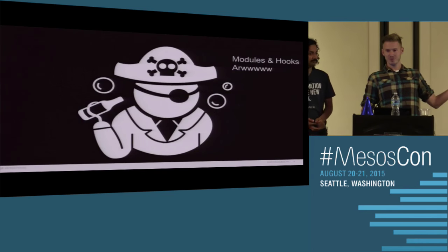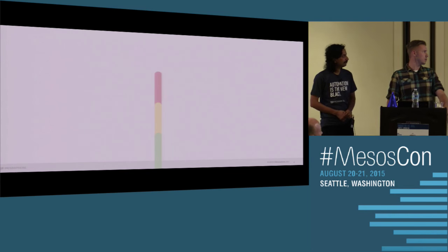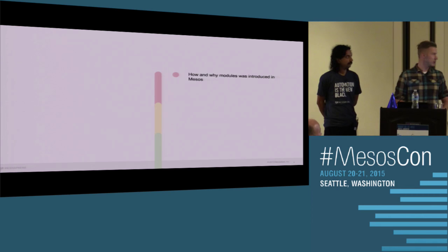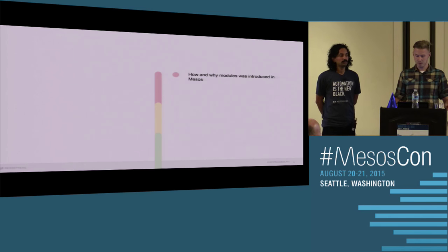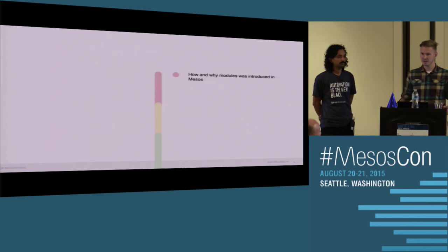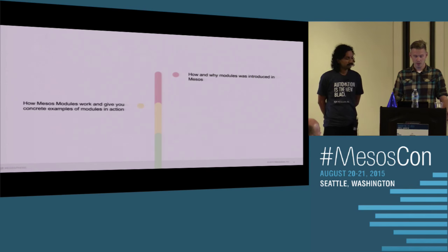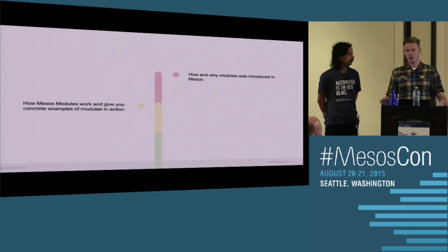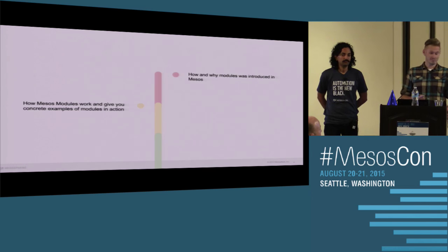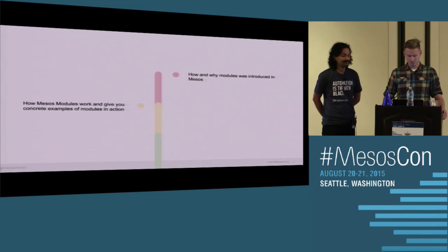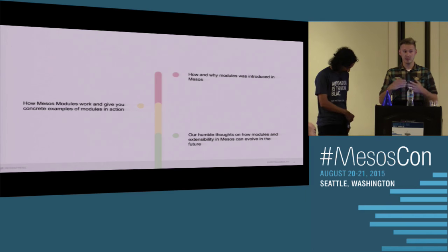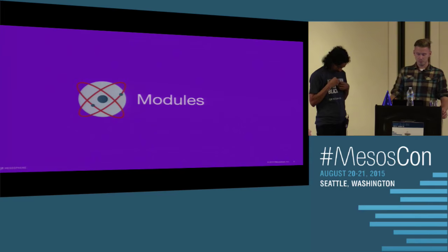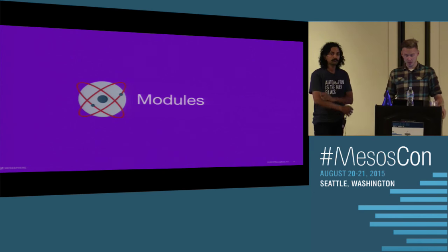We're here to talk about hooks and modules, and we're going to do this in three sections. First, we're going to talk about how we came to think about modules, why we needed them, why we needed a plug-in system for Mesos — basically motivating the existence of modules. Then Kapil will go into the nitty-gritty details of how modules work and, more importantly, how to write one, with an awesome demo. And lastly, we'll touch upon future developments we see could happen with Mesos modules.